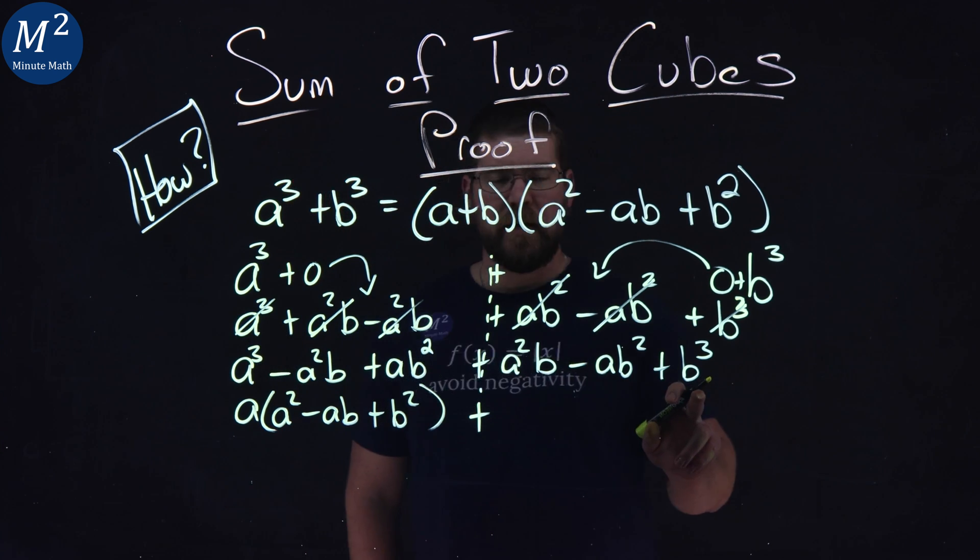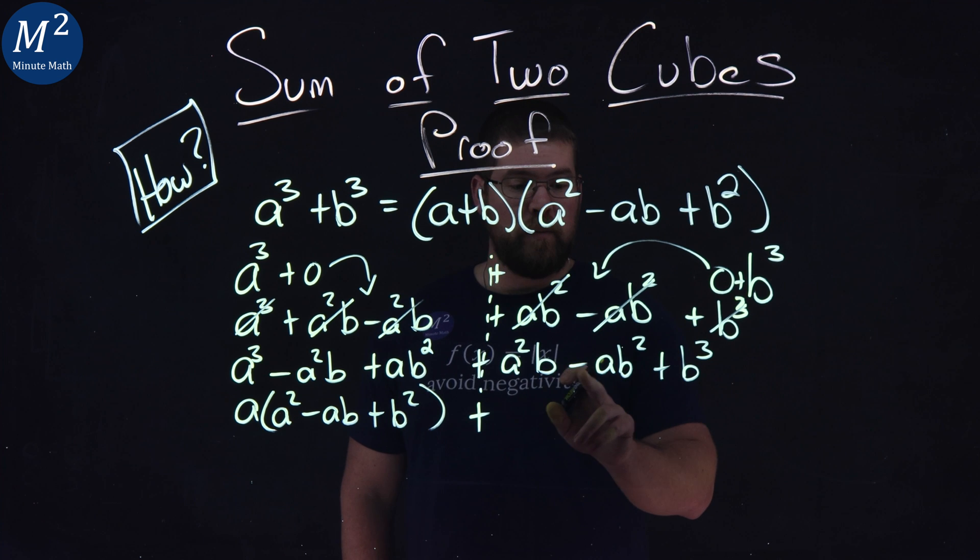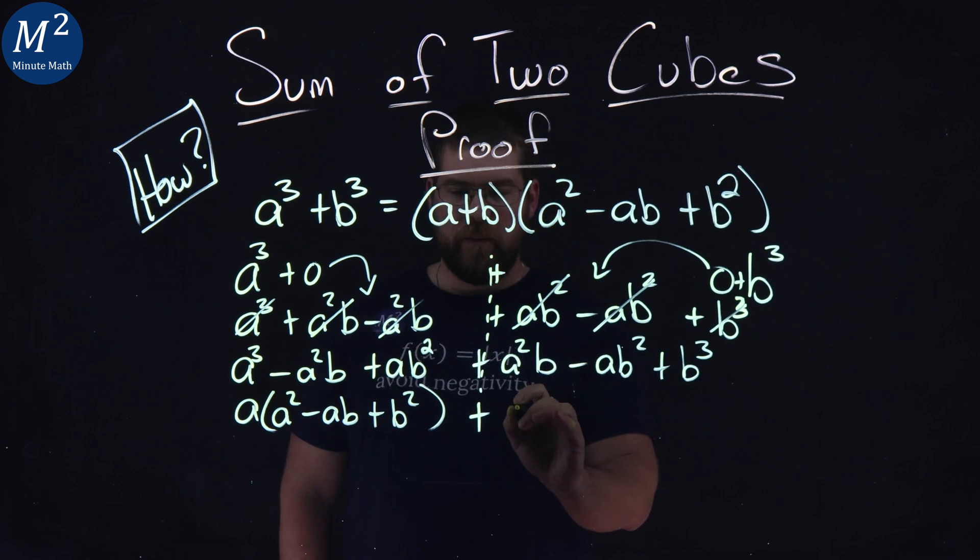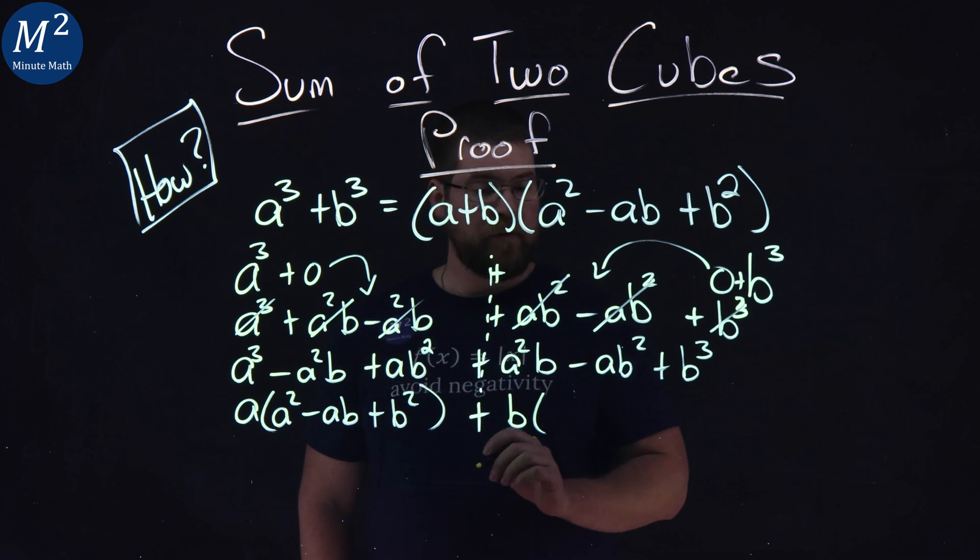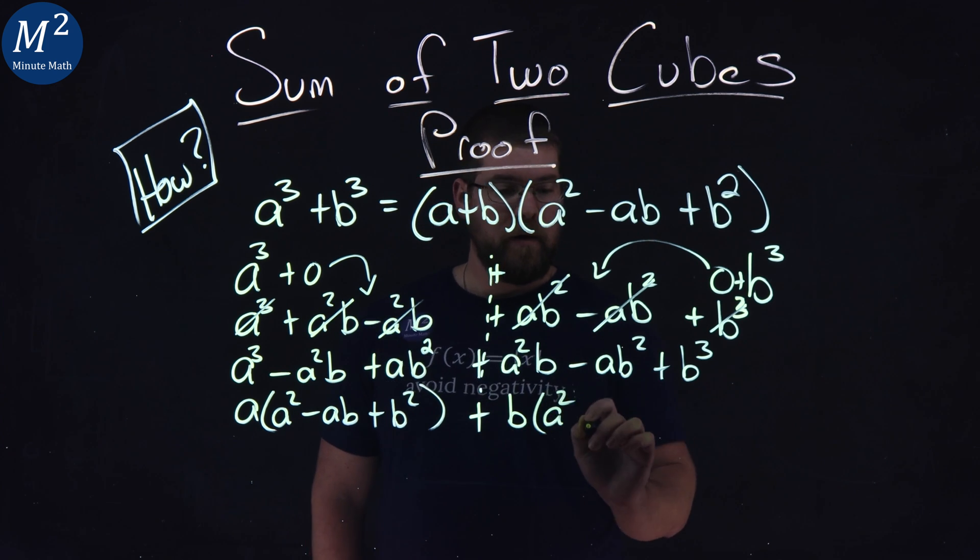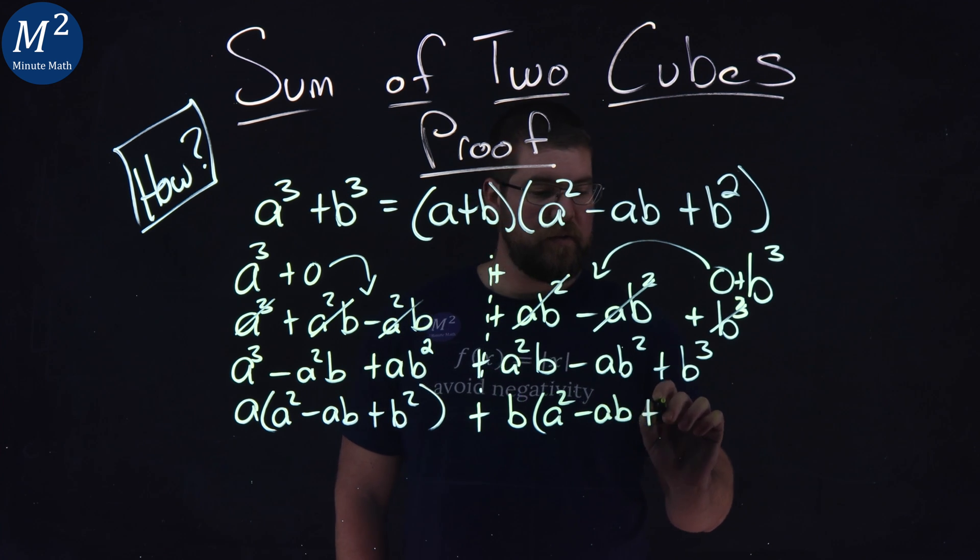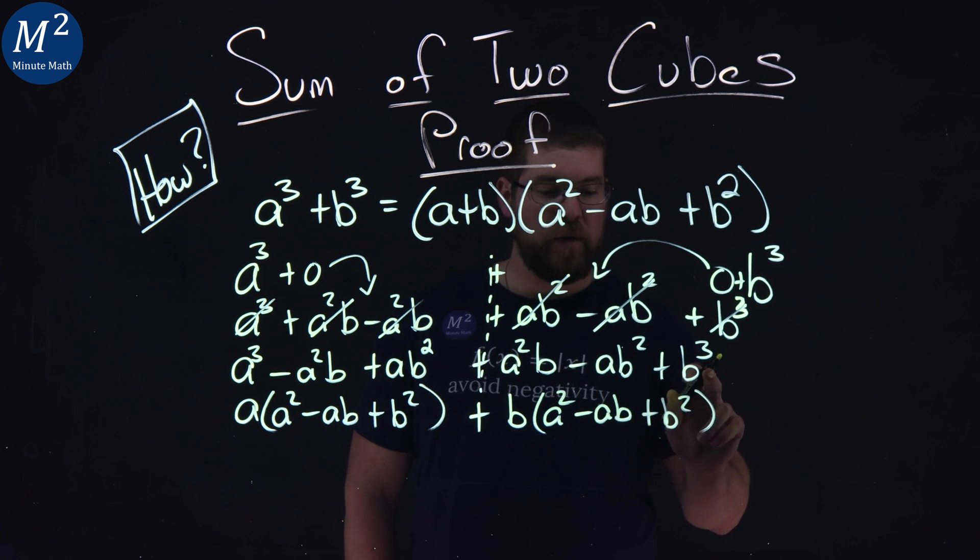Now the second section here, I see the same thing. I see a b that I can pull out from each part. Pull out a b here and then I'm left with a squared minus ab plus b squared. I pull out a b from there.